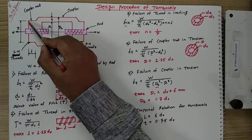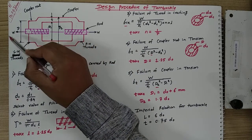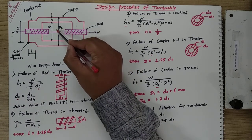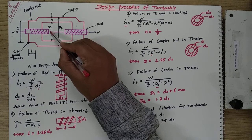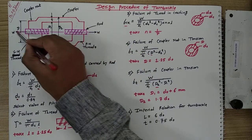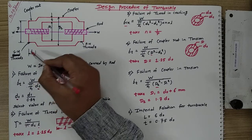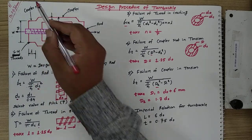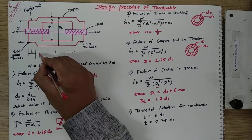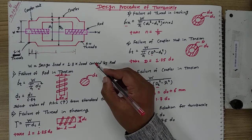The next part is the coupler nut, having a diameter capital D. After that, the next part is the coupler, which is a hollow circular section having outside diameter D2 and inside diameter D1, with thickness small t. W represents the load acting on the coupler rod. Small l represents the length of the coupler nut, and capital L represents the length of the coupler.